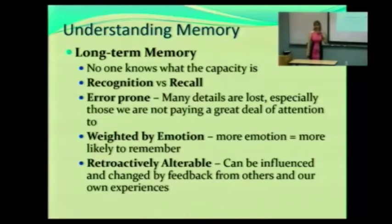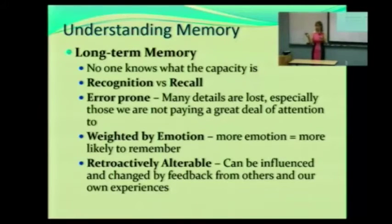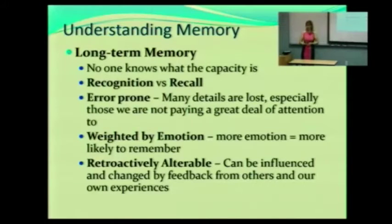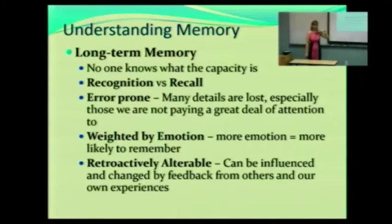Why is that? Our long-term memory — a lot of times we think of it as just being a photograph we take of our surroundings, but that's actually not the case. Our long-term memory is actually very error-prone. It is very easy for us to make mistakes because it's a complex process to take in information and then try to pull that information out — encoding and decoding that information. With our long-term memory, we tend to lose a lot of the details. We tend to remember larger events.